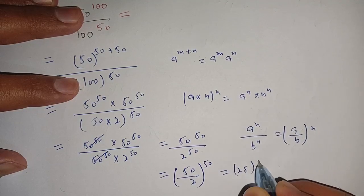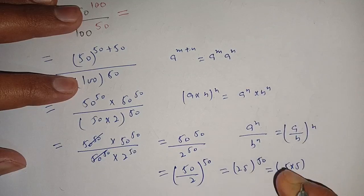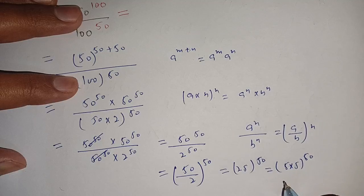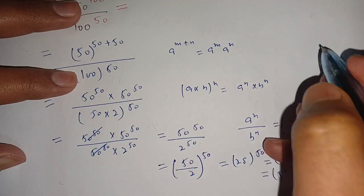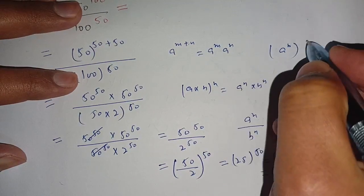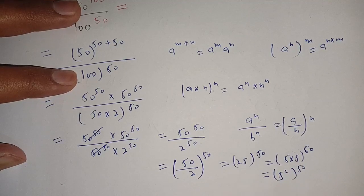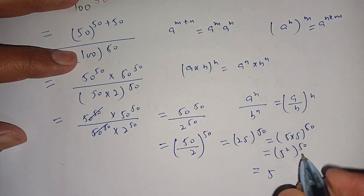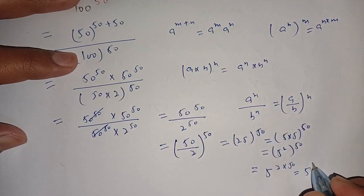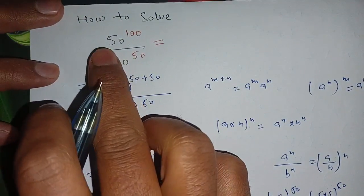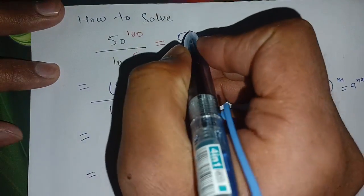50 divided by 2 is equal to 25, so we have 25 power 50. We can write 25 as 5 multiplied by 5, which is 5 power 2. We also know the identity: a power (n into m) is equal to a power (n multiplied by m). Now multiplying 2 multiplied by 50 we get 5 power 100. Thus the required solution of 50 power 100 divided by 100 power 50 is equal to 5 power 100.